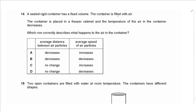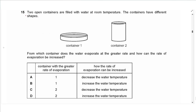Question 14: a sealed rigid container filled with air is placed in a freezer. Since the volume is fixed, the average distance between particles does not change. Because temperature decreases, the kinetic energy of particles decreases and so does their average speed. The answer is D.